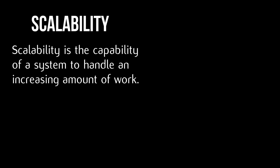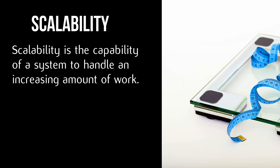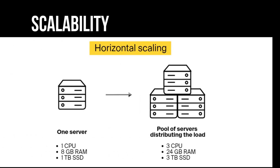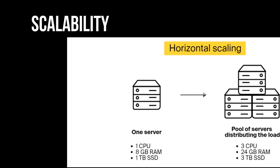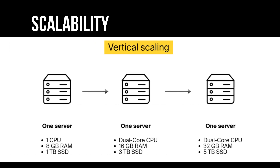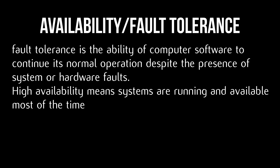Scalability is the capability of a system to handle an increasing amount of work. There is vertical and horizontal scaling: in horizontal scaling you add more servers, and in vertical scaling you use more powerful servers. Fault tolerance is the ability of software to continue its normal operation despite the presence of system or hardware faults. High availability means systems are running and available most of the time.